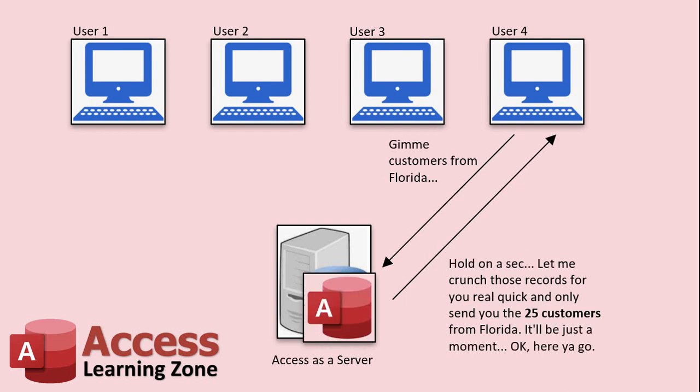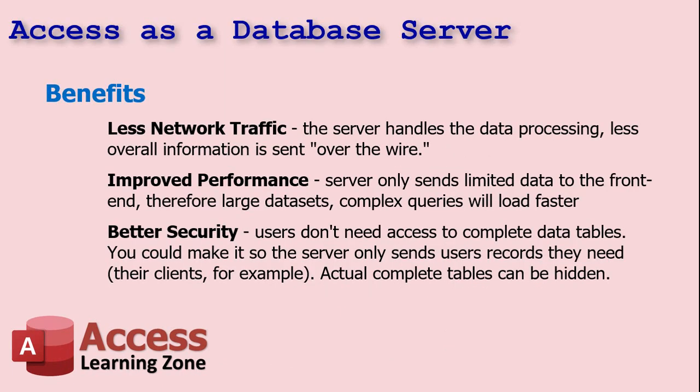What we can do is run a process on your Access back-end so Access will actually be open and running and waiting for commands — it'll act like a makeshift database server. It'll be sitting there looping, waiting for you to send it a command. You give it a command saying 'give me all the customers from Florida,' it runs the query locally on the remote server, takes those 10,000 records, puts the 25 records in a temporary table, then you just link to that temporary table. Now your system only has to pull down those 25 records. This isn't a perfect method and there are some drawbacks, but it's a middle ground between a basic Access split database setup versus upgrading to a full-fledged SQL Server.